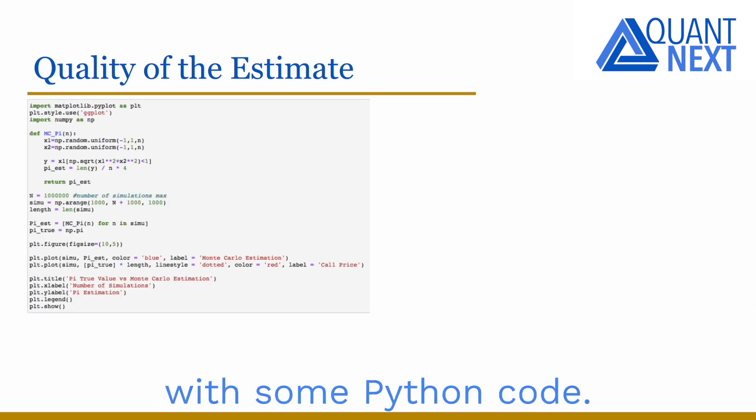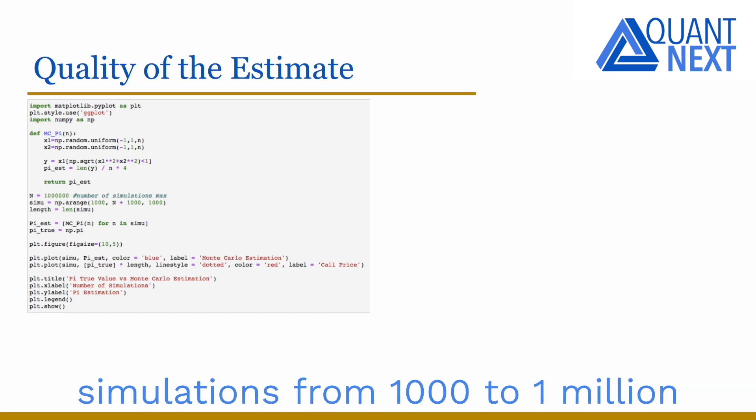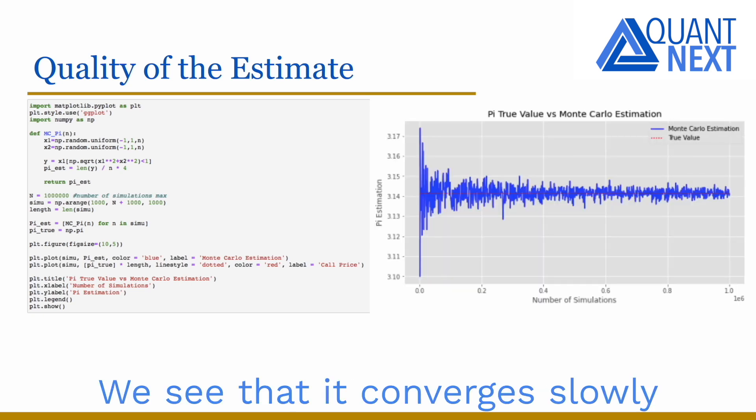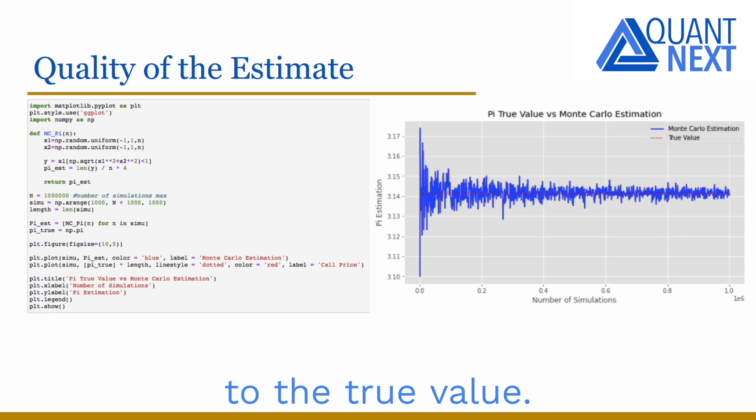Let's look at it with some Python code. We run 1000 times Monte Carlo simulations to estimate pi by increasing the number of simulations from 1000 to 1 million and we plot the estimate. We see that it converts slowly to the true value.